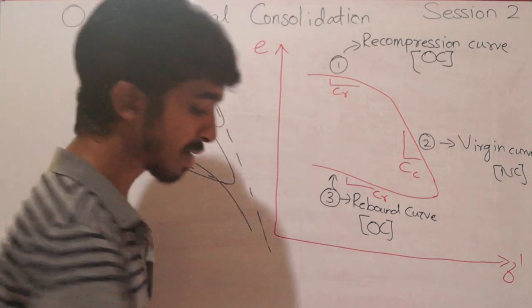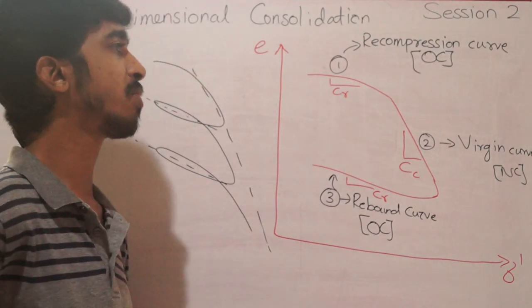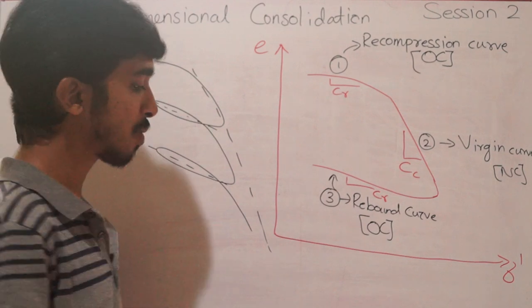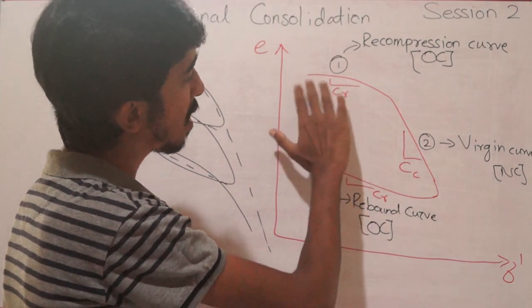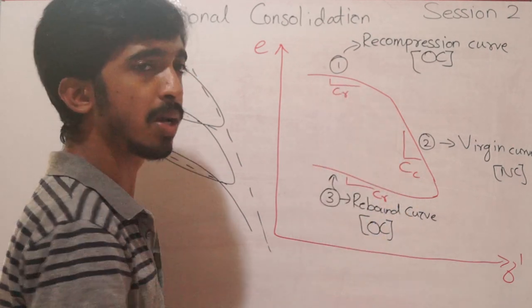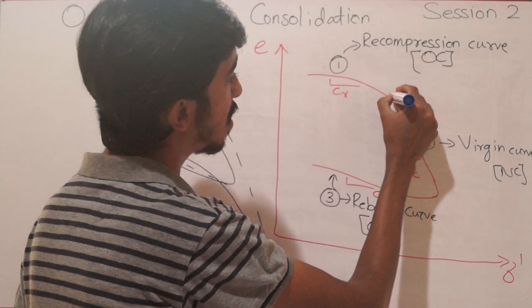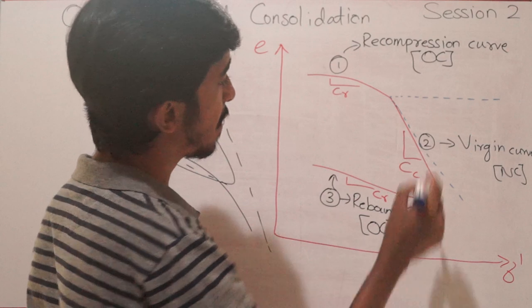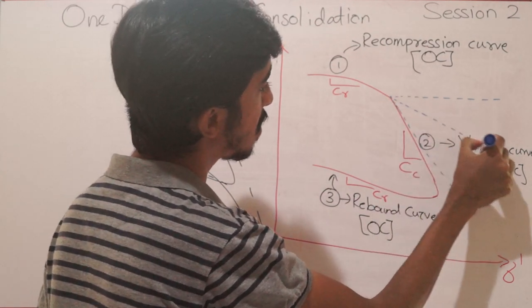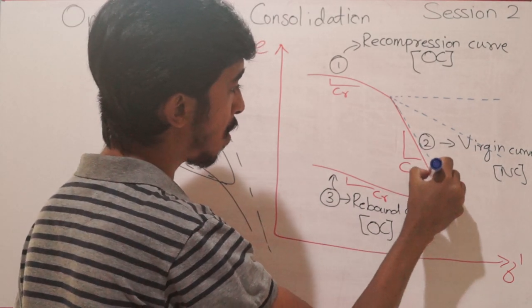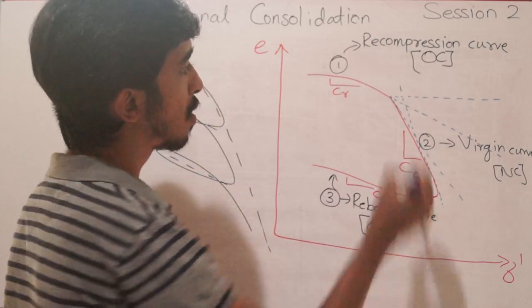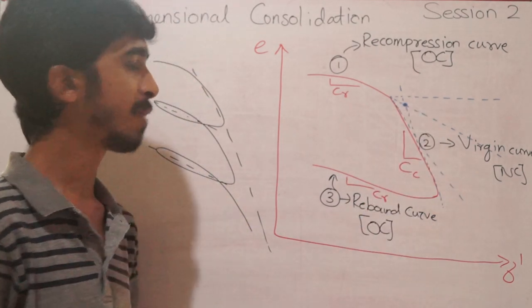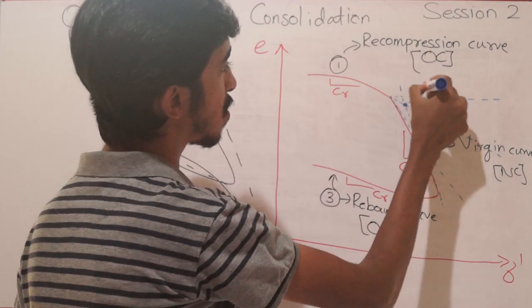Casagrande proposed a method to find the pre-consolidation pressure σ_p' — the maximum stress the soil has experienced in its history. First, identify the point of maximum curvature (sharpest turn) on the graph. At that point, draw a horizontal line and a tangent line. Draw the angle bisector of those two lines. Then draw a tangent to the virgin curve from the bottom. The intersection of the angle bisector and the virgin curve tangent gives the pre-consolidation pressure σ_p'.